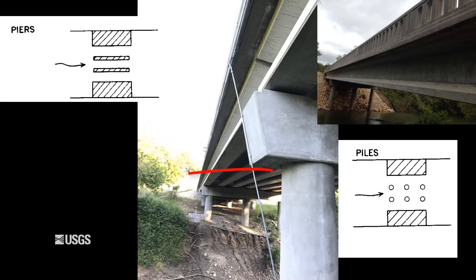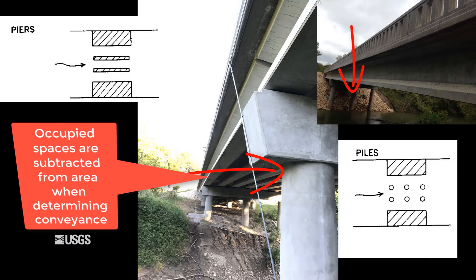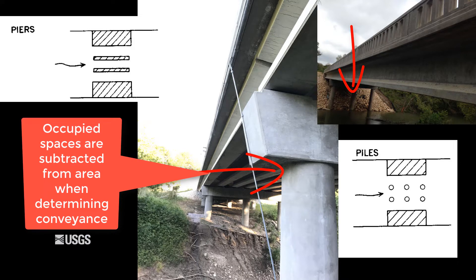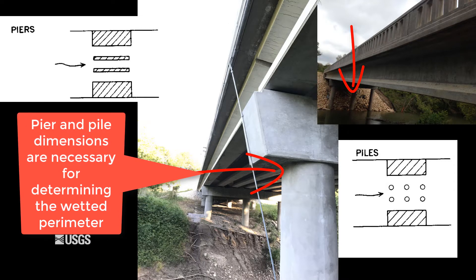Complete information about the piers and piles, including the width, height, shape, and quantity, is necessary so that you can accurately define the area submerged in the cross section. These occupied spaces will be subtracted from the overall area when determining the conveyance for the contracted cross section, Section 3. The pier and pile dimensions are also necessary for determining the wetted perimeter when computing the hydraulic radius, R.